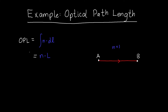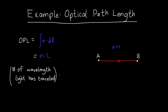In a less mathy way of talking about it, it's the number of wavelengths, or the distance that the light has traveled. It's the number of wavelengths multiplied by the wavelength in air. Physically, when light is in a low index medium and then hits a higher index medium, it bunches up, and so it's as if the light is traveling further when the refractive index is higher.